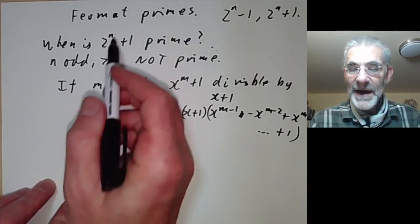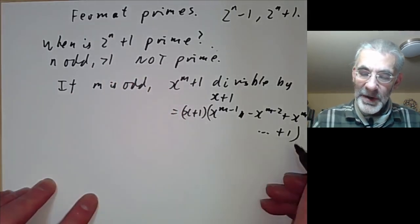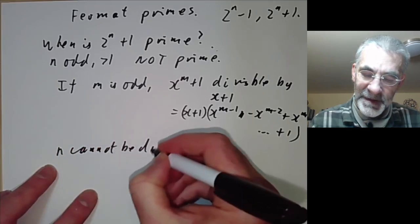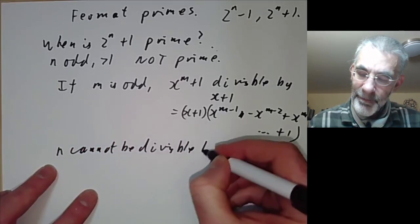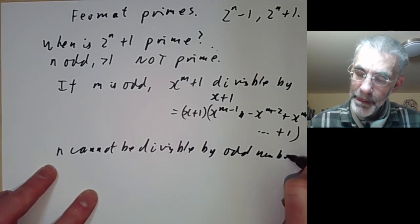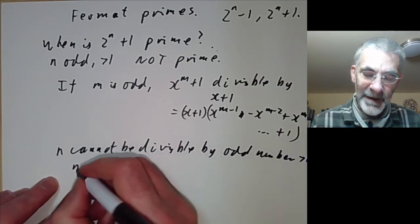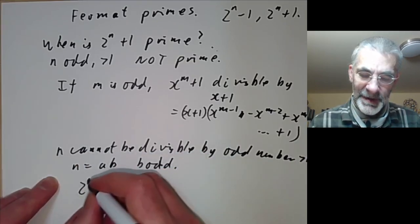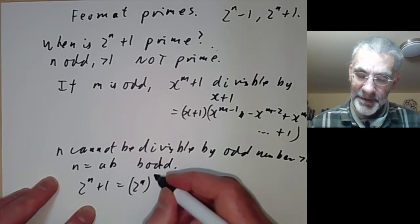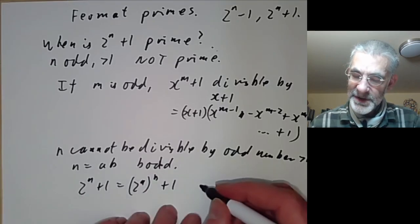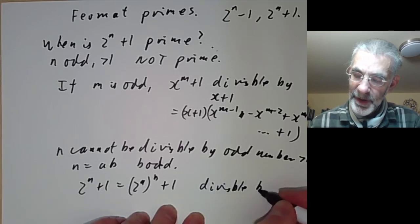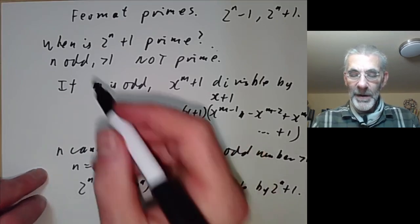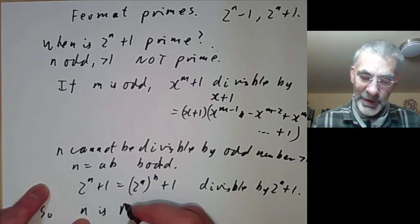So first we observe n must be odd. We can do better: n cannot be divisible by any odd number greater than 1. Because if n equals ab with b odd, then 2 to the n plus 1 equals (2 to the a) to the b plus 1, which is divisible by 2 to the a plus 1. Therefore n must be a power of 2.